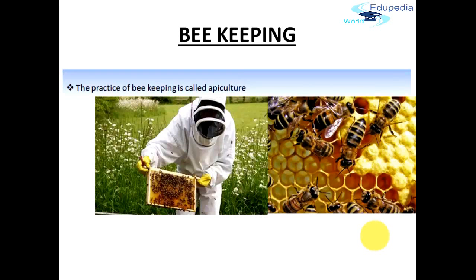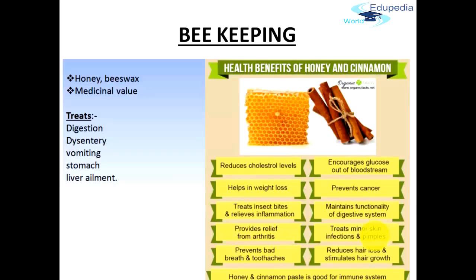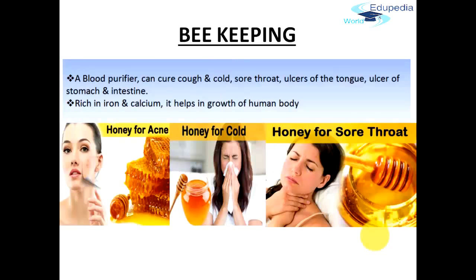Let's now talk about beekeeping. The practice of beekeeping is also known as apiculture, and it is done to obtain mainly honey and beeswax. Honey is known to have a lot of medicinal value — it is found to be quite useful in the treatment of various disorders such as digestion problems, dysentery, vomiting, stomach ache, and liver ailments. Honey is also supposed to be a blood purifier and a cure against scurf, cold, sore throat, ulcers of the tongue, ulcers of the stomach and intestines. Because honey is rich in iron and calcium, it helps in the growth of the human body.